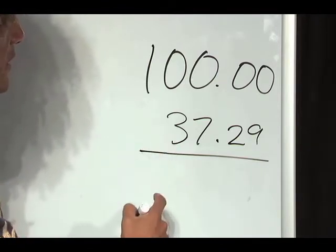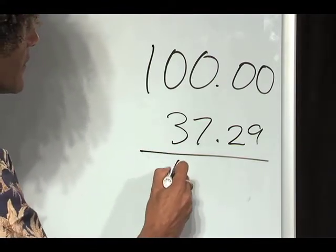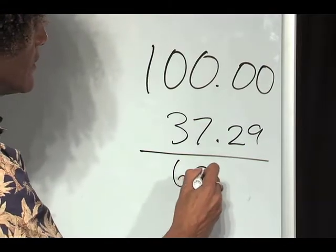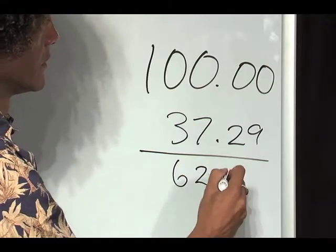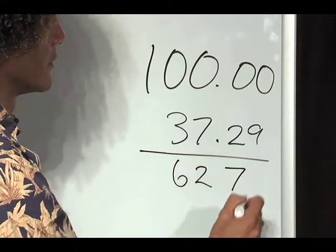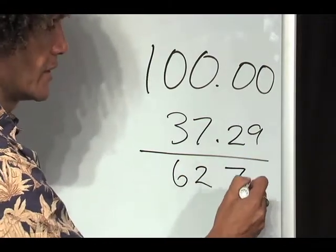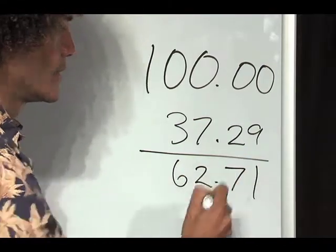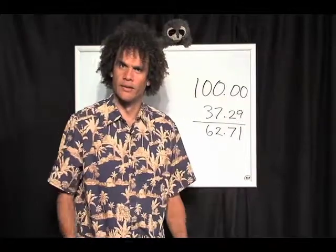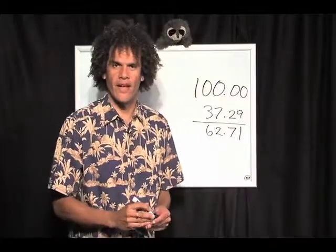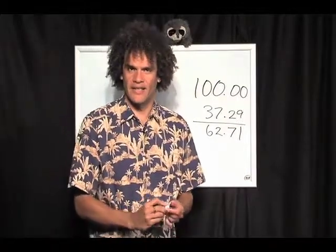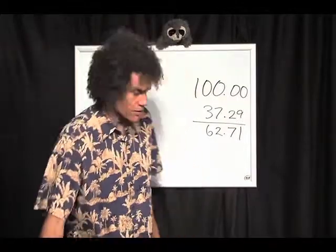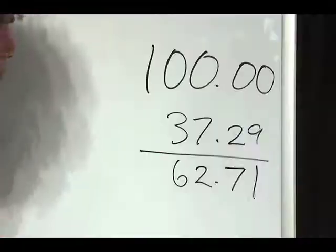What does this need to be 9? — 9, 6, 2, 7 — and this needs to be a 10. Done! That fast, that easy. Let's do another one, quickly.